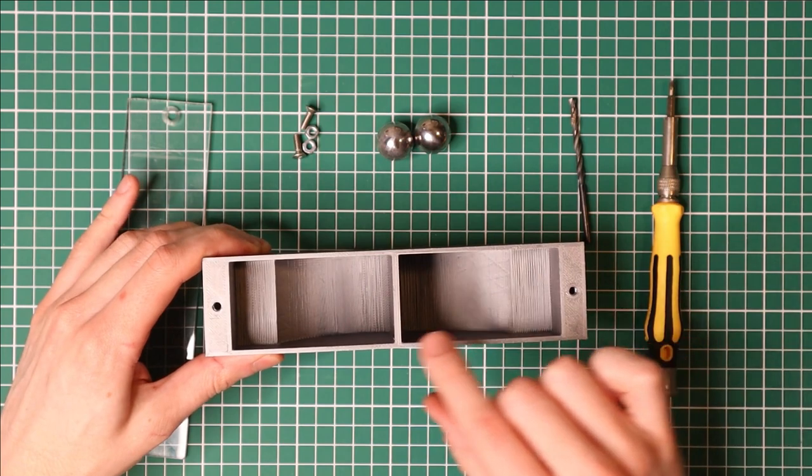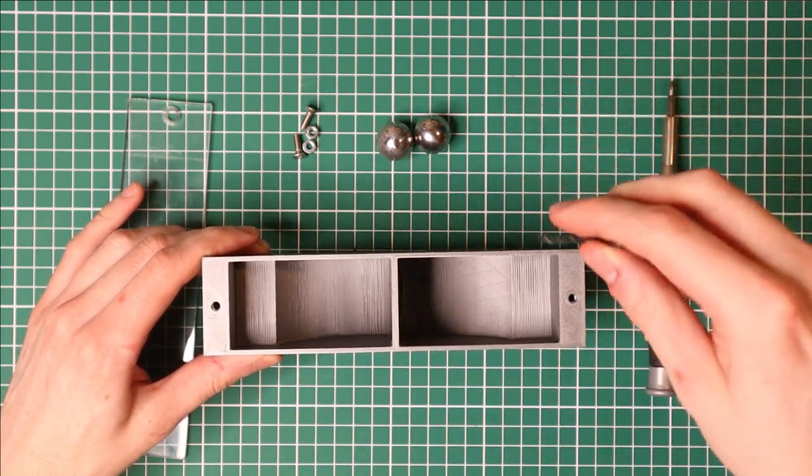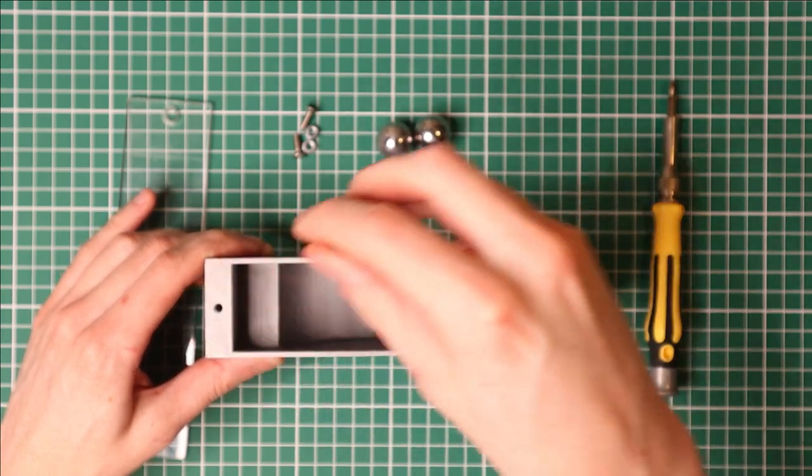Now for the screw holes, I've used some sacrificial bridging. So the first thing you have to do is drill out these holes to remove the sacrificial bridge.